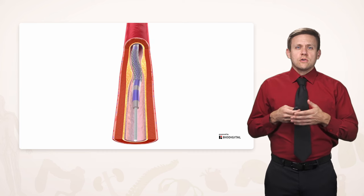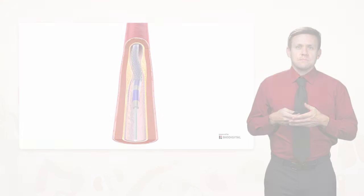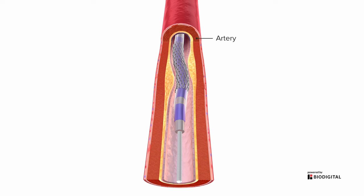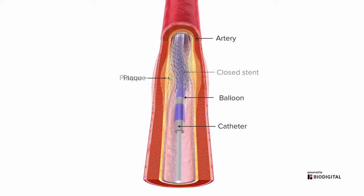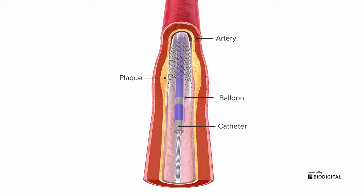One thing you can do about coronary artery disease is bust that plaque open by going into the artery with a closed stent. Then, with a catheter that has a balloon, you can inflate that balloon and push the plaque out of the way, reconstituting the normal lumen of the artery and restoring flow through that portion to get oxygenated blood back to the heart muscle.